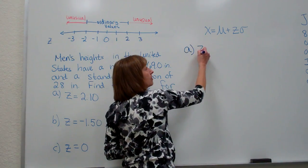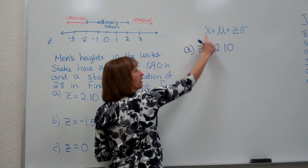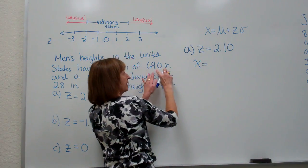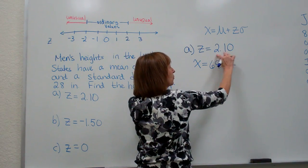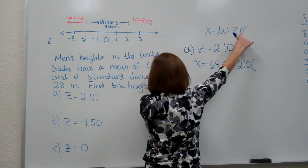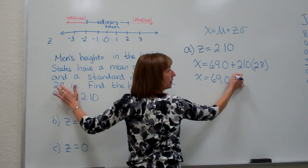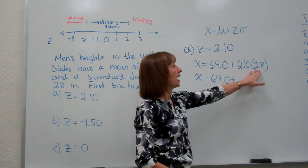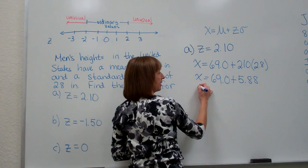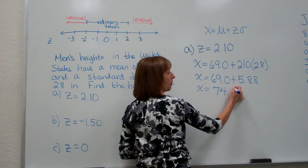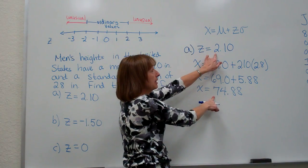So in part a when they give us our z-score is 2.10 I'm going to find my raw score x by taking the mean of the data set which in this case is 69.0 and adding to it the z-score they gave me 2.10 multiplied to the standard deviation of your data set. So here I have 69.0 plus when I take 2.10 times the 2.8 I get 5.88 and then when I add these together I get x is equal to 74.88. And as I expected I got a data value that is larger than my mean when I started with the z-score that was positive.